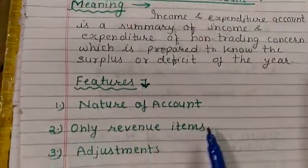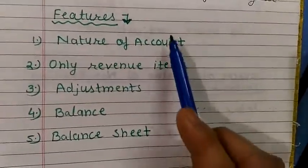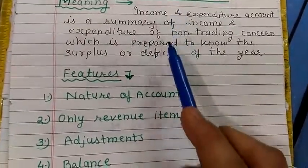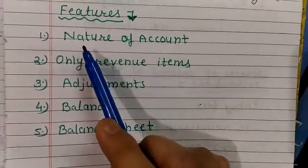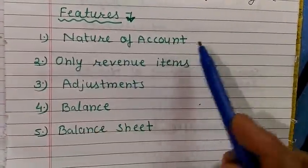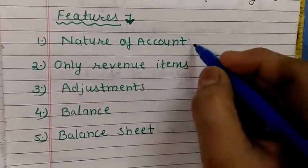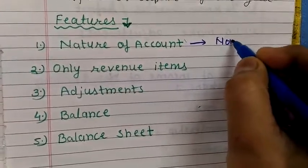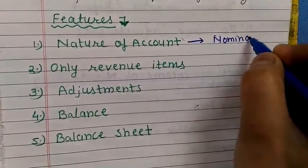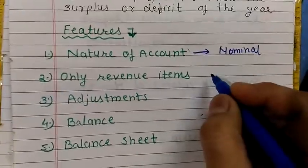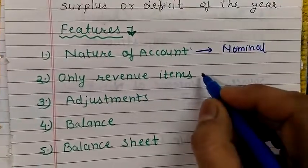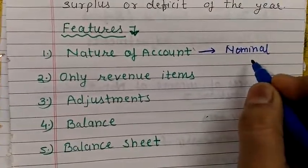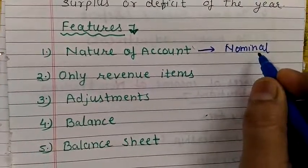Now, what are the features of this account? The features also lie in its definition. First, the nature of the account: this account is a nominal type of account. Nominal means it is related to income and expenditure, which is related to any type of income, gain, or loss.